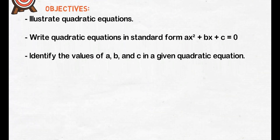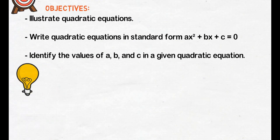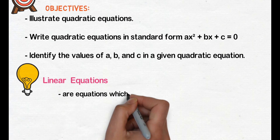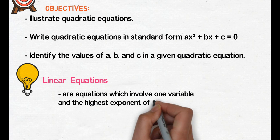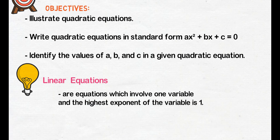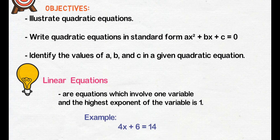First, let's review what a linear equation is. Linear equations are equations which involve one variable, and the highest exponent of the variable is 1. Example: 4x plus 6 equals 14. Based on the definition, this is an equation with one variable — x. The highest exponent of this variable is 1. In our example, we don't see a visible exponent on the variable. When the exponent of a variable is 1, we no longer need to write it.